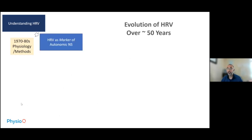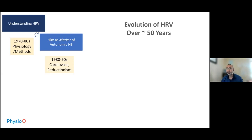Now we're focusing on part two: heart rate variability as a marker of the autonomic nervous system. This covers the 1980s and 1990s, when cardiovascular medicine was at its golden age and research was focused on reductionistic approaches — basically breaking down components and focusing on specific factors involved in disease processes. As a result, heart rate variability became a way to hone in on the autonomic nervous system.